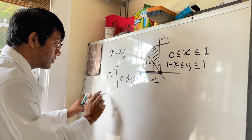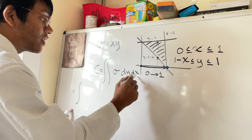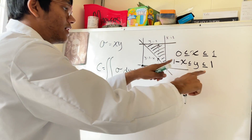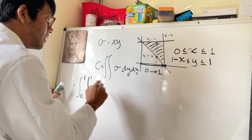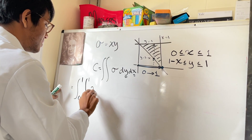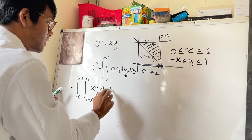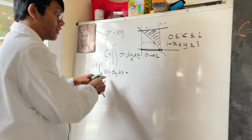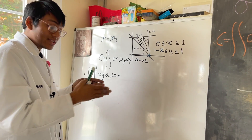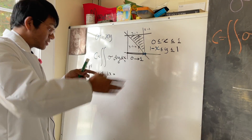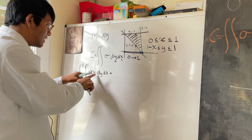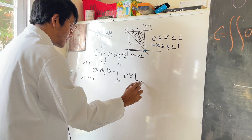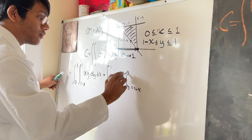Now we can set up the integral. The outer integral (x) runs from 0 to 1, and the inner integral (y) runs from 1 minus x to 1. The integrand is just xy, so we have the double integral from 0 to 1, from 1 minus x to 1, of xy dy dx. For the inner integral, holding x constant, the antiderivative of xy with respect to y is one-half xy squared, evaluated from y equals 1 minus x to y equals 1.